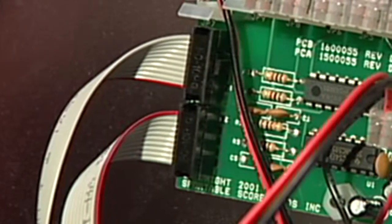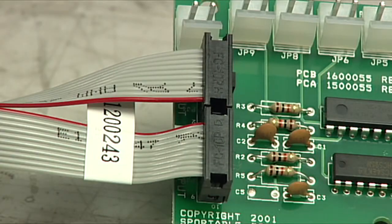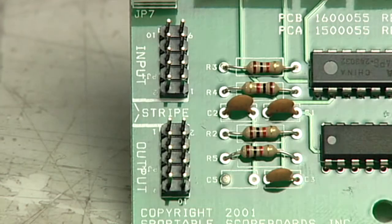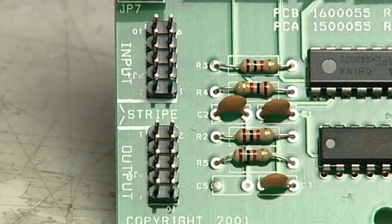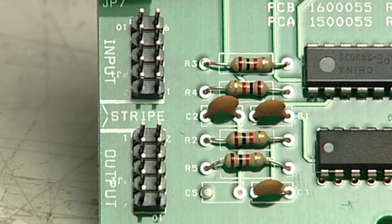The ribbon cables are attached to the input and output connectors. Label each ribbon cable with either input or output before removing them from the driver board.